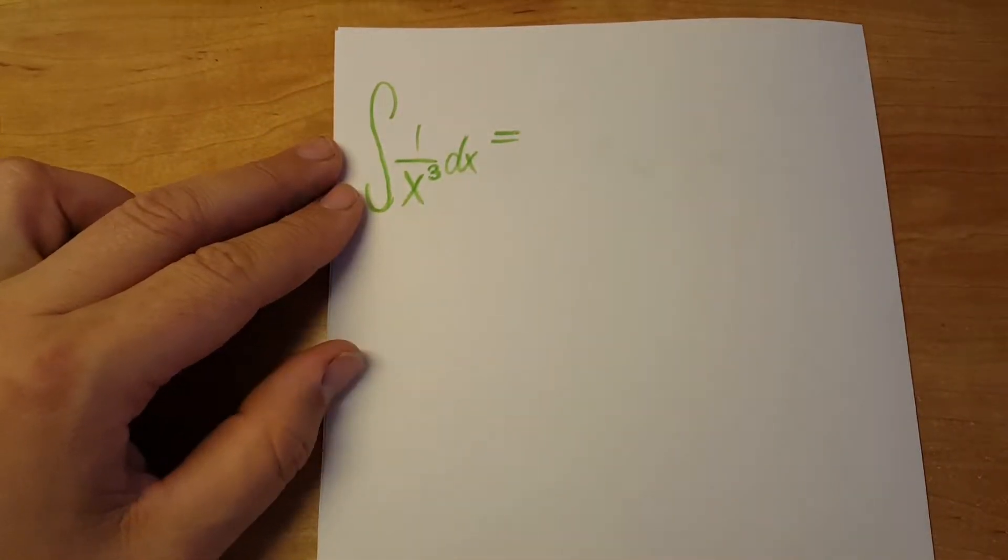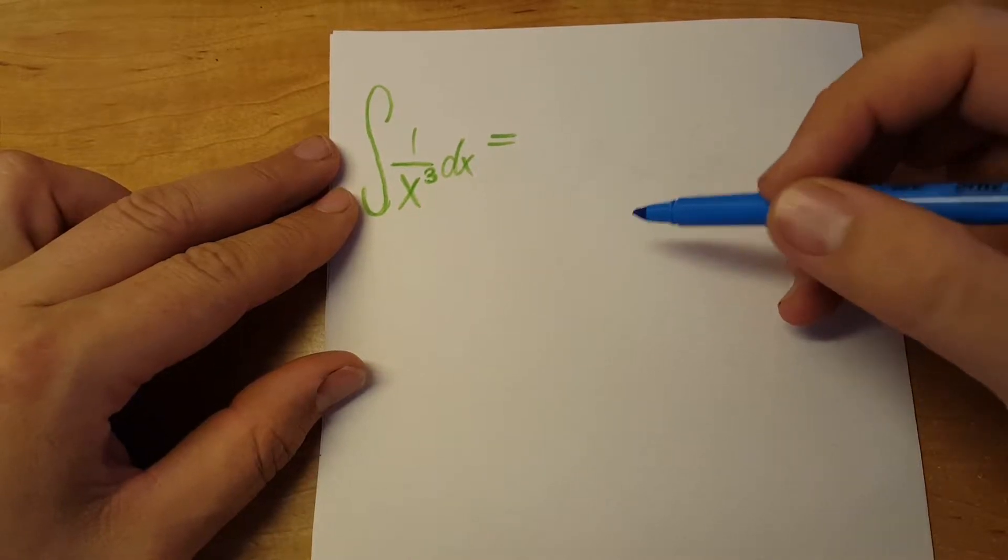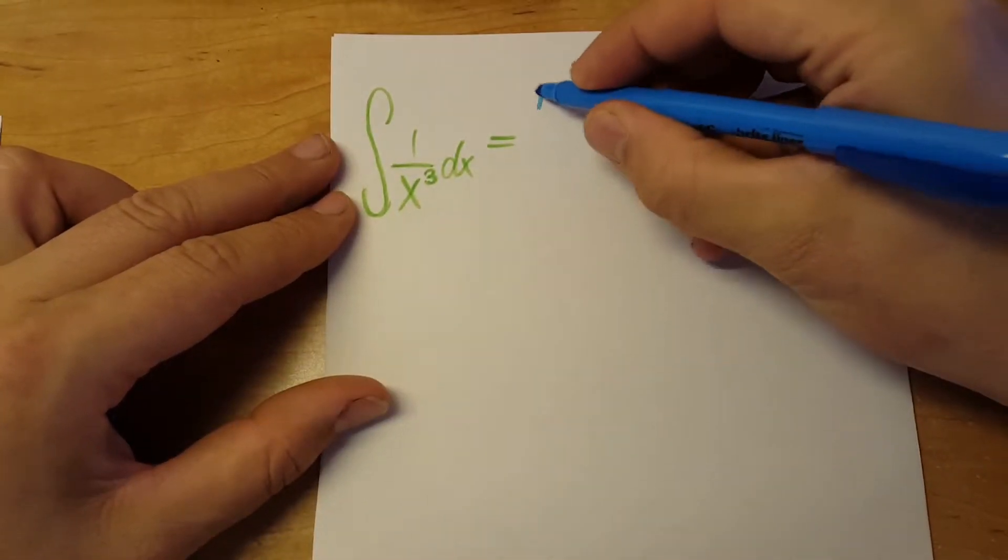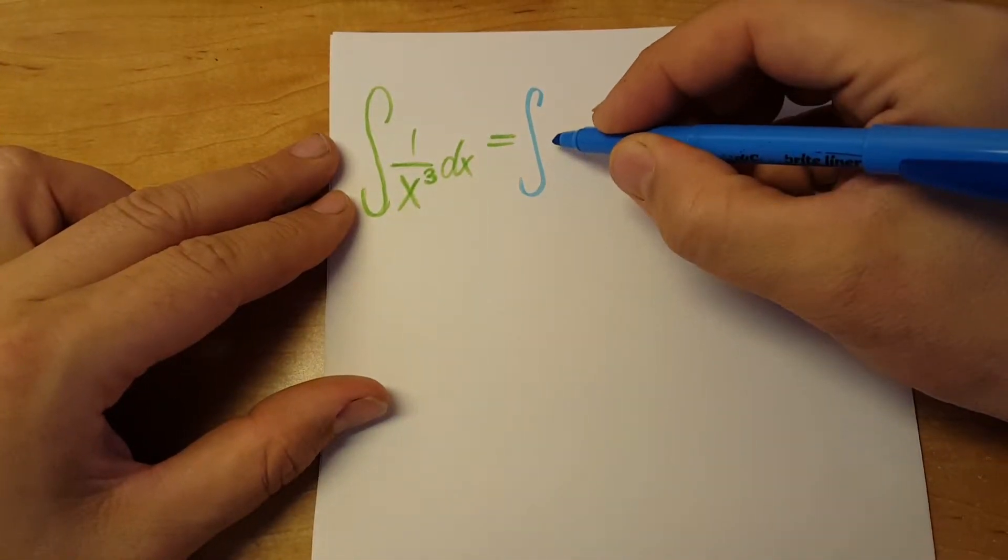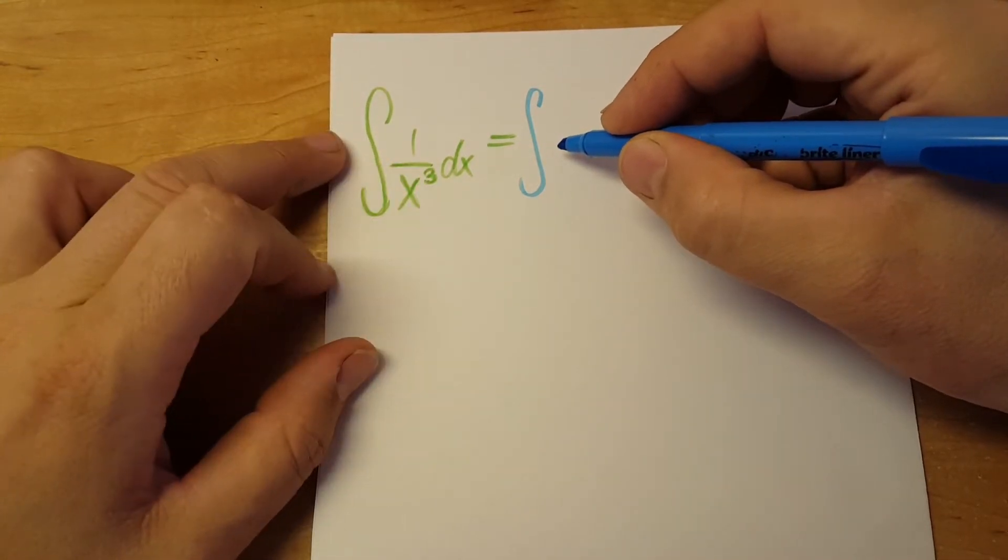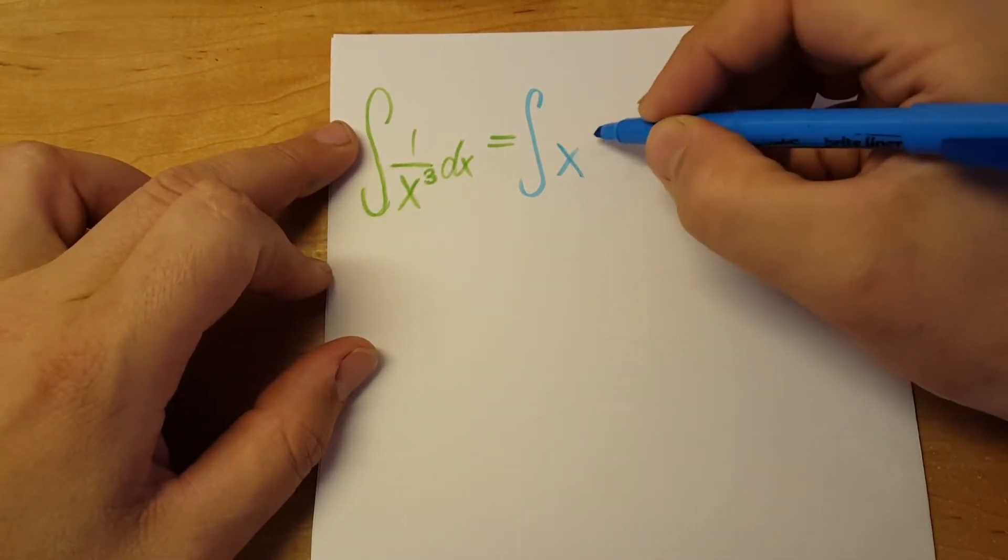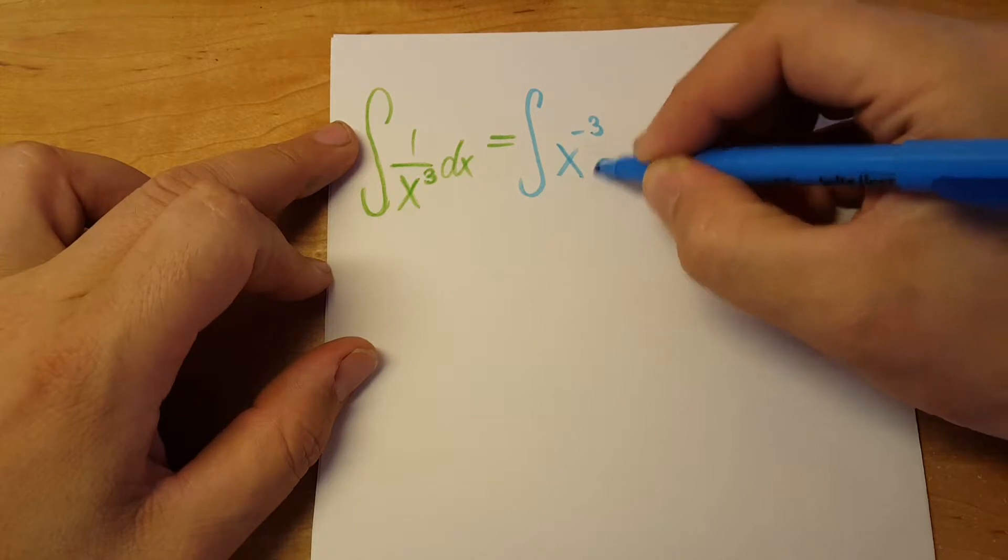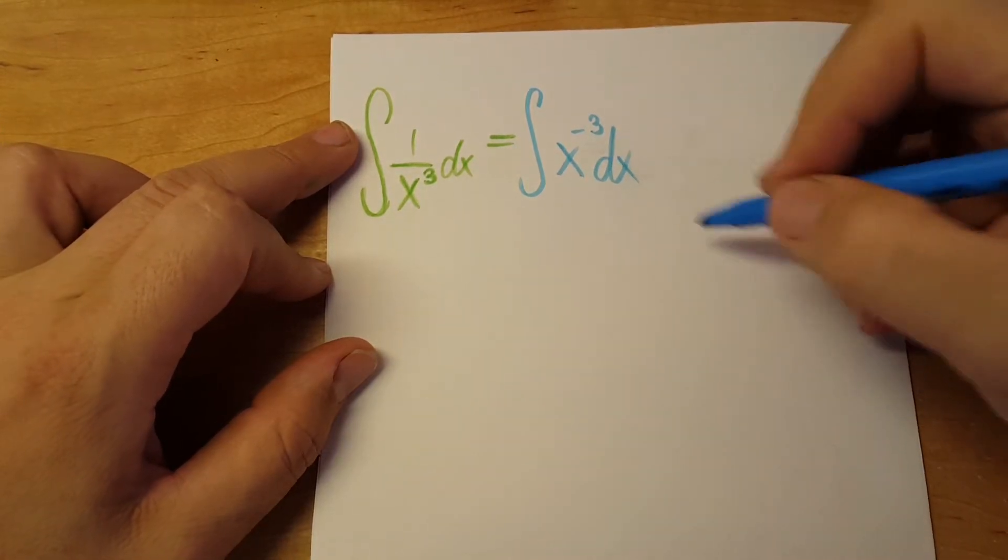Okay, this is an integration, fairly easy one. Let's start by rewriting it. 1 over x to the cube we can rewrite it as x to the negative third dx.